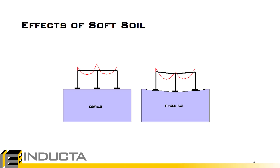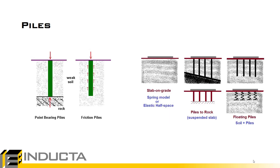Looking at piles, there are a few ways to model them: point bearing piles shown on the left and friction piles on the right. For point bearing piles, we simply model the piles as columns and the slab as a suspended slab, without needing to model the soil at all. For friction piles, we input the pile properties and some initial settlement resistance.